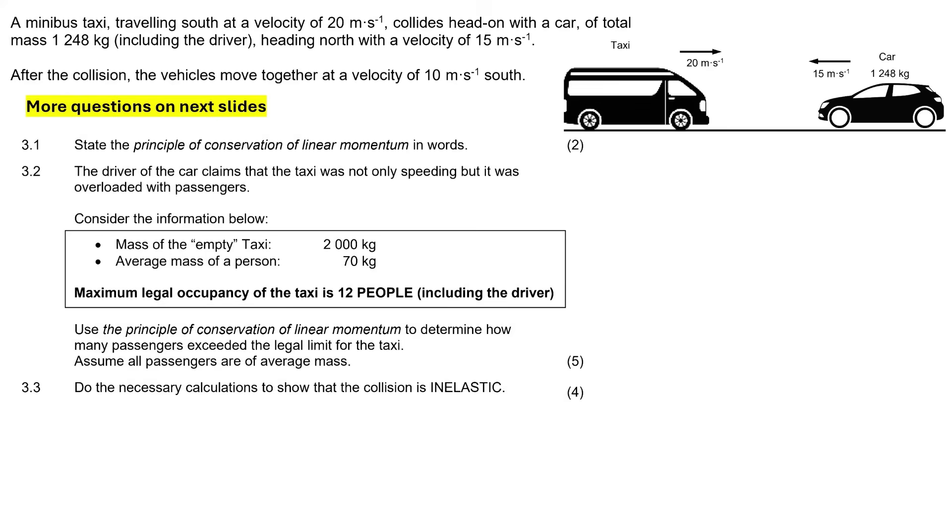A minibus taxi traveling south at a velocity of 20 meters per second collides head-on with a car of total mass 1248 kilograms, which includes the driver, heading north with a velocity of 15 meters per second. We can see what's happening here. We've got a vehicle, a taxi, traveling at 20 meters per second that is going to collide with a car traveling at 15 meters per second in this direction, and they're going to obviously collide.